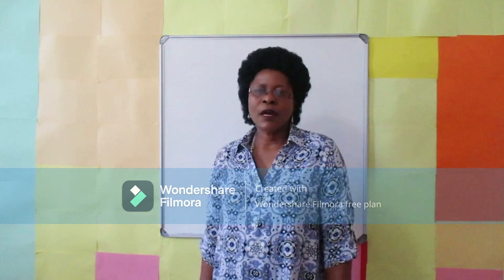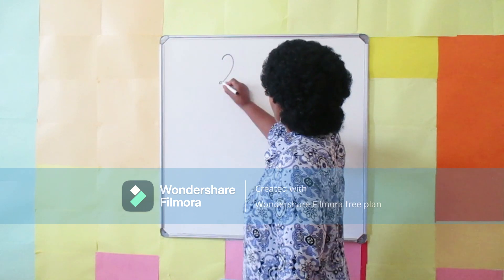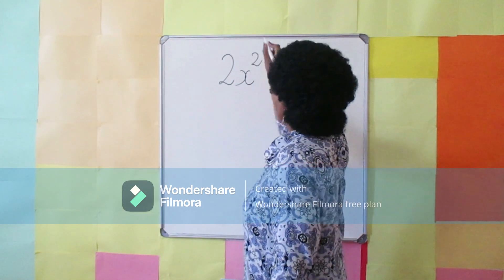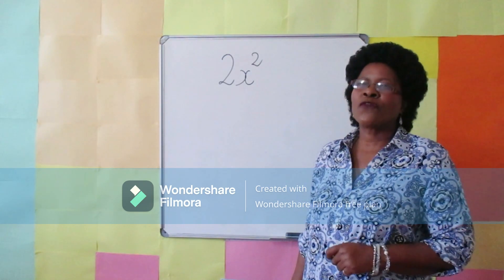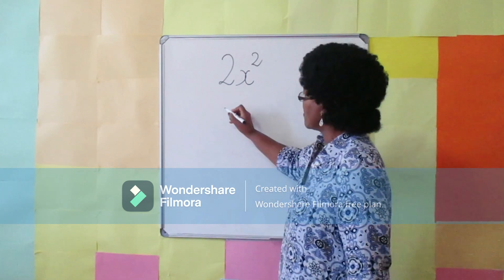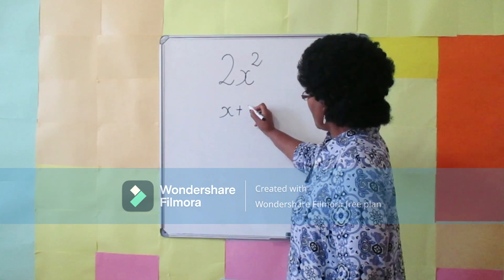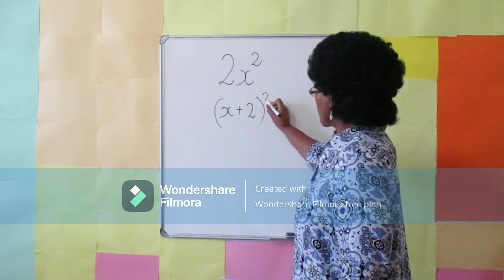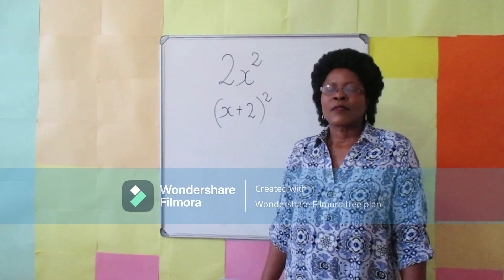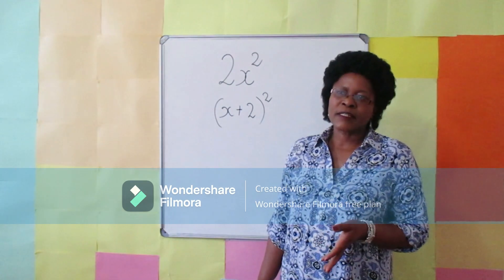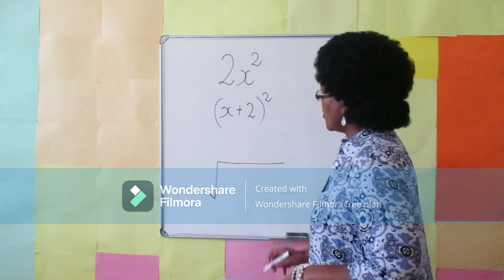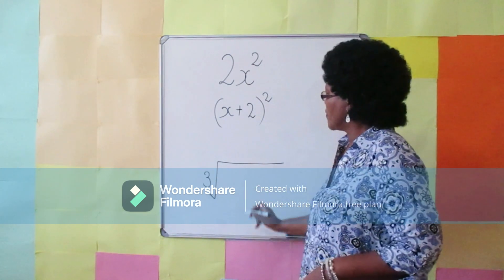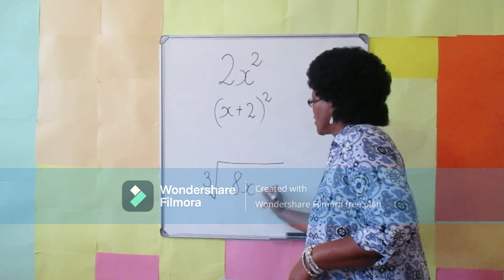The square of a number multiplied by 2 — how is it written? The square of the sum of a number and 2 — how is it written? Number, sum, and 2, group them, then square. The cube root of the product of 8 and the number — how is it written? Cube root of the product of 8 and the number.